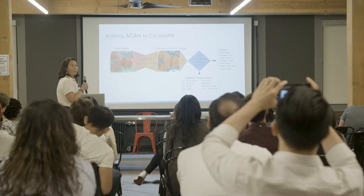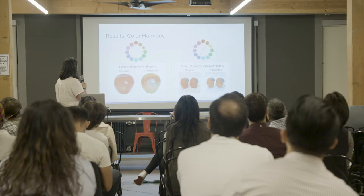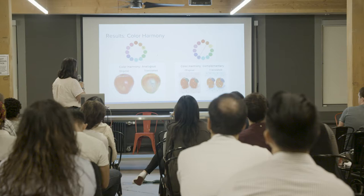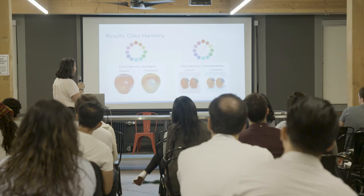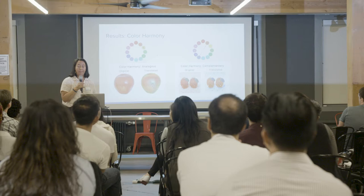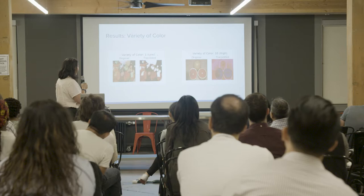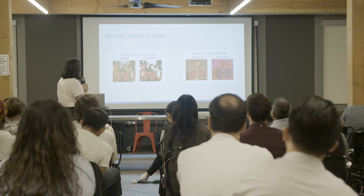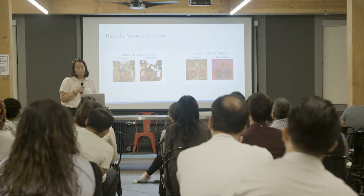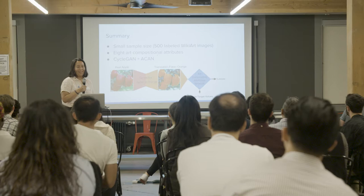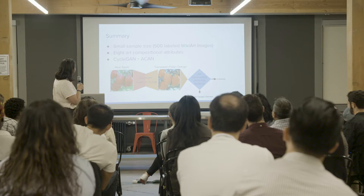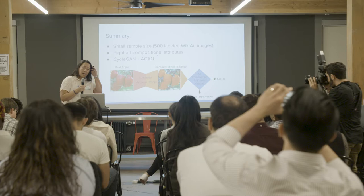Here are some example results. For color harmony, after passing the apple in with a high analogous value, it was able to create an analogous color wheel. For complementary color, the leaf and the background were changed to blue cyan. For variety of color, an image with a lot of color was translated into a monochromatic red, and the opposite case generated many colors. Even with the relatively small dataset of 500 labeled WikiArt images, I was able to train on these eight art compositional attributes via the CycleGAN plus the ACAN network and get some pretty interesting results.